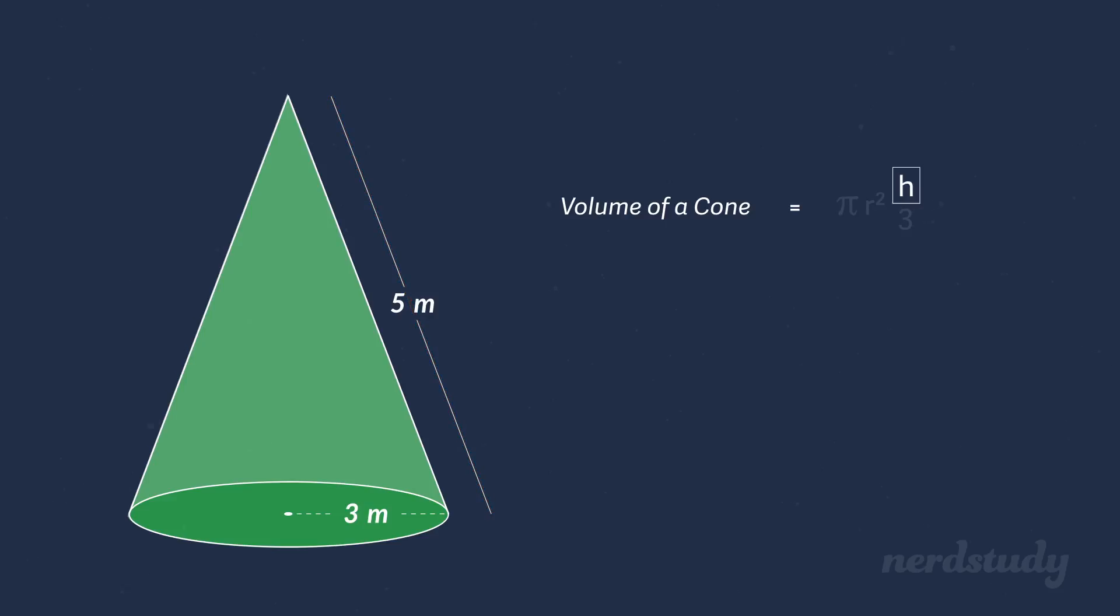But we know that our h is not 5 meters. And why? Ah, yes! Because for volume, the height is referring to the height of the cone itself.